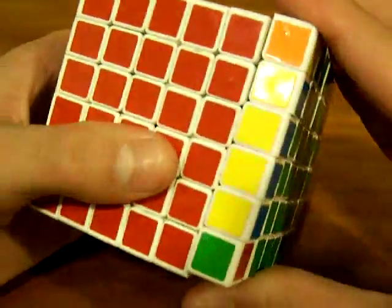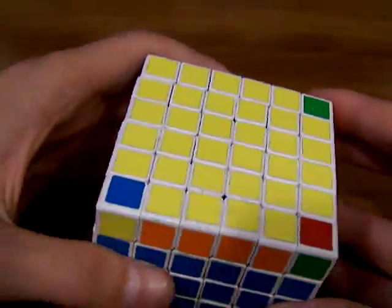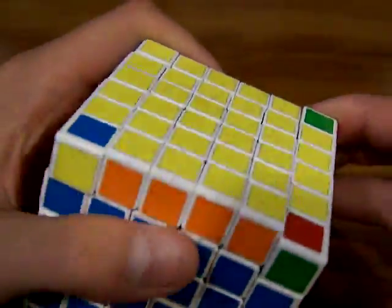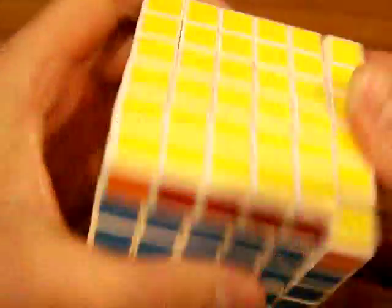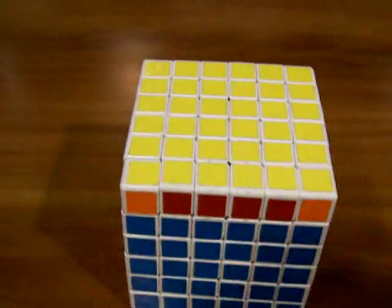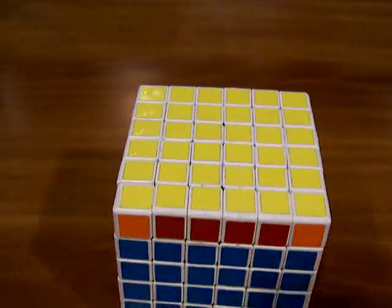But just get your cross, if you do 2-look OLL, like that, and then just solve it, and get all the yellows on there. Which, if you know how to do Friedrich, that is an algorithm anti-soon.